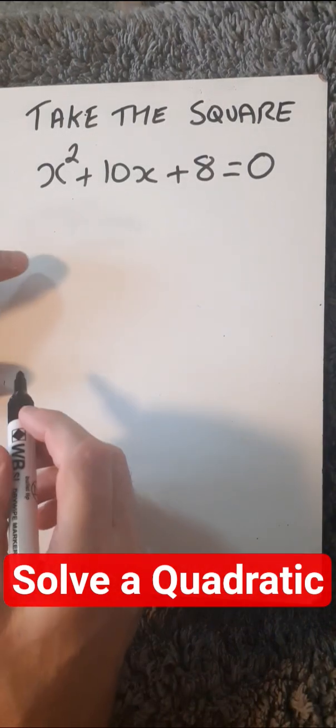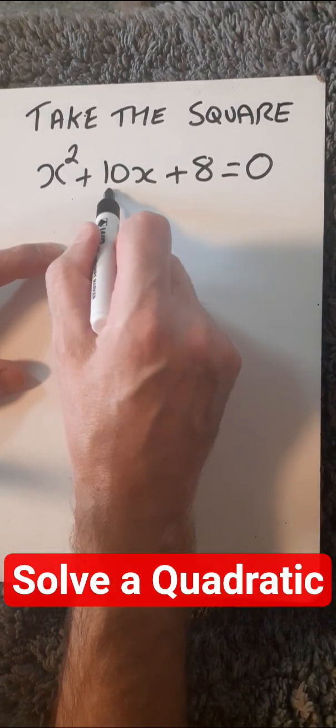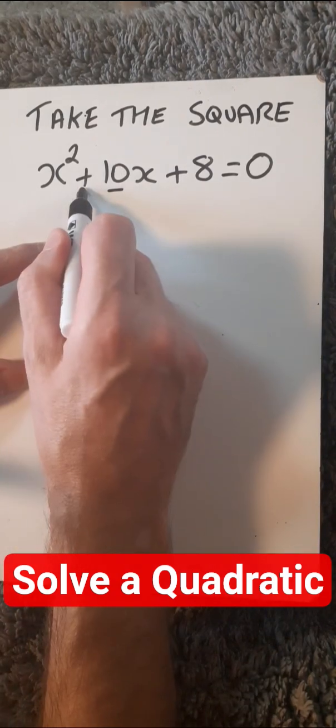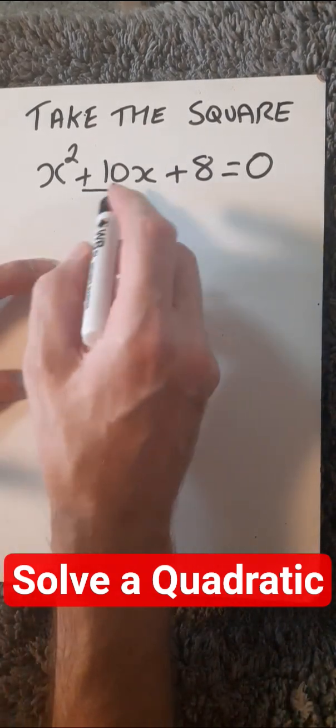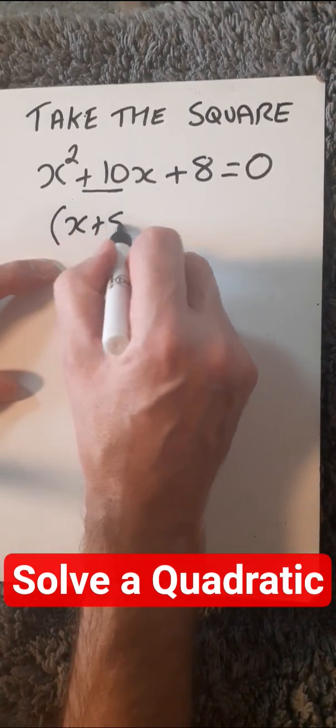So, to solve this by taking the square, what we have to do, we have to take this coefficient here and include the plus sign and just half it and write it in a bracket like this.